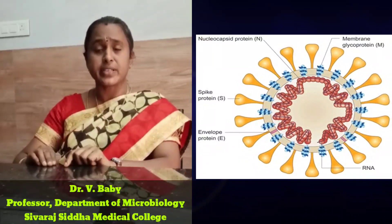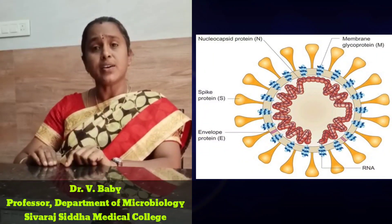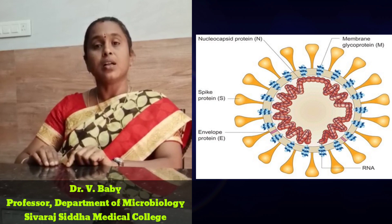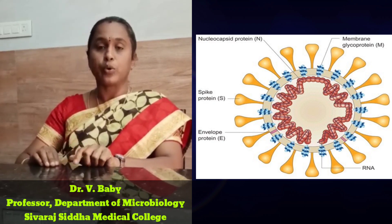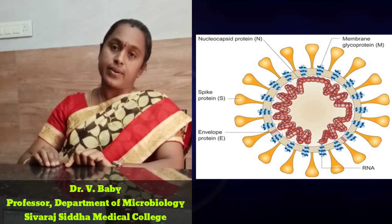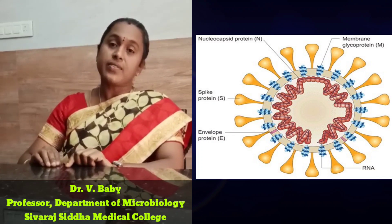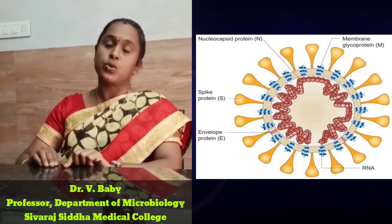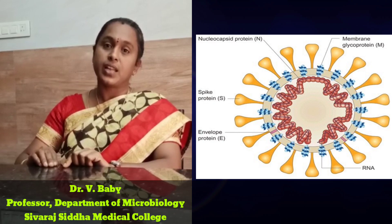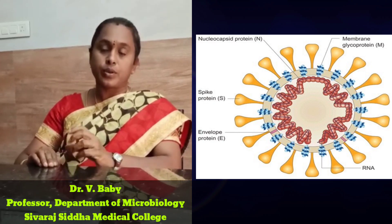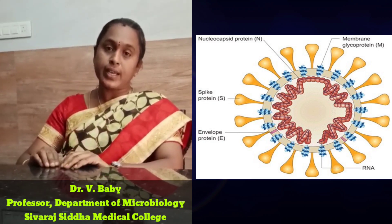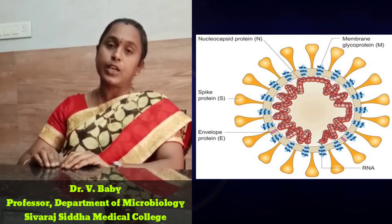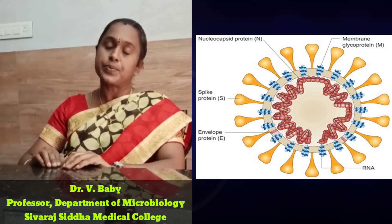This virus is an RNA virus. If you look at the RNA virus, it has a lipid bilayer membrane. This virus has an envelope. If you look at the envelope, there are spikes — glycoprotein receptors on the surface.